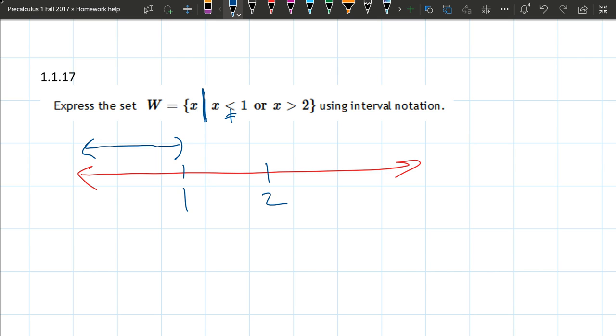The other we have is x is greater than 2. Greater than means not equal to. So here's 2. Everything greater than 2 is to the right. So again, we're using parenthesis and everything to the right. Now either of these could happen.